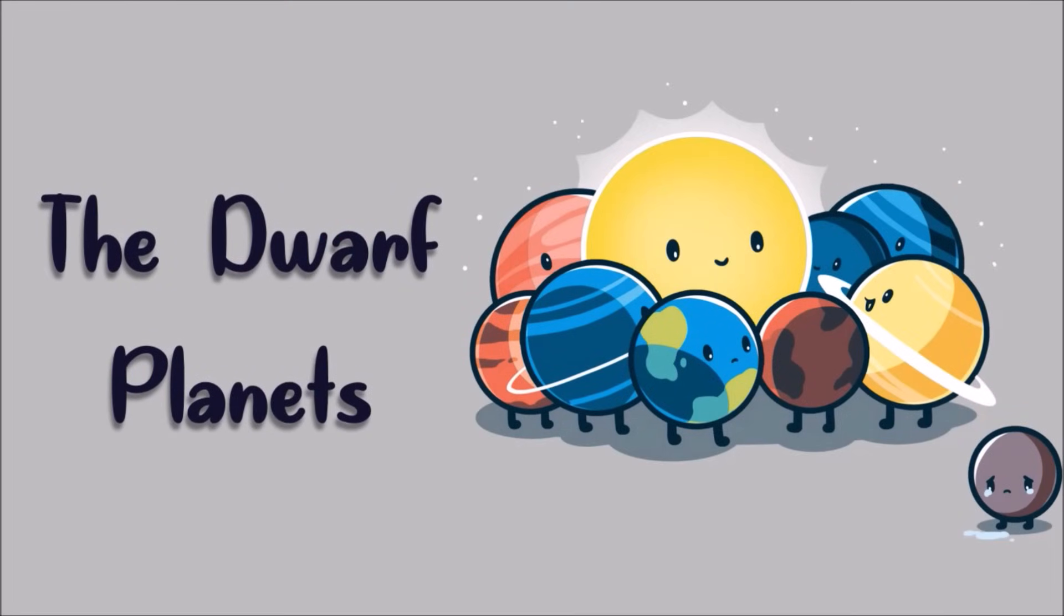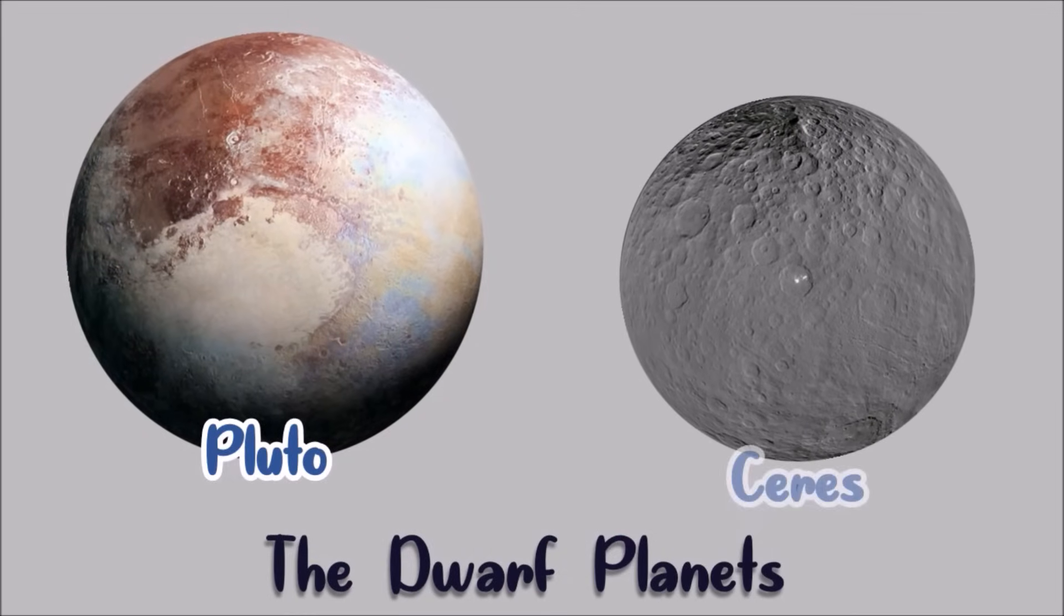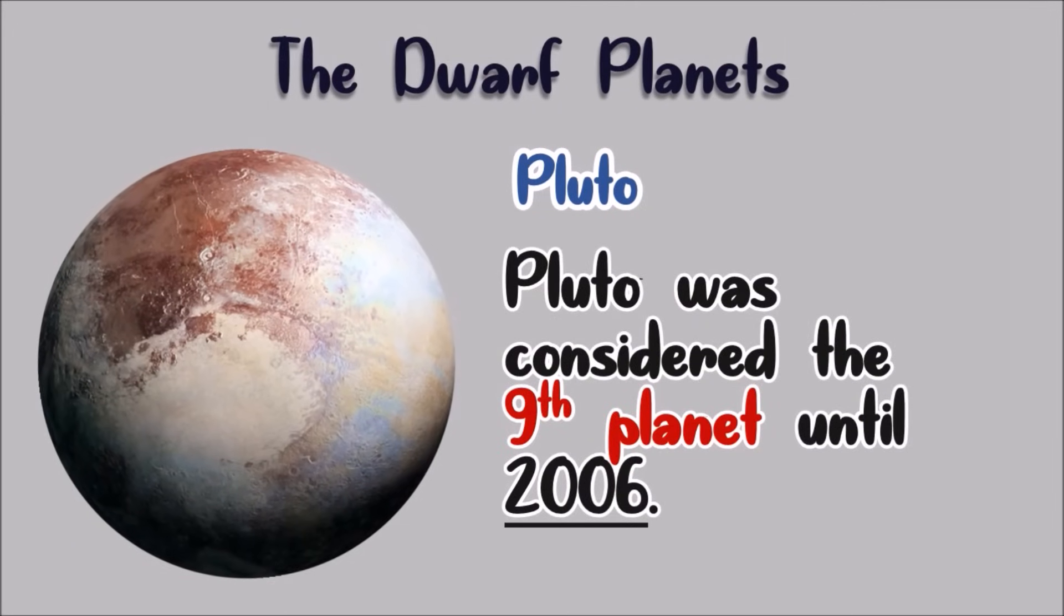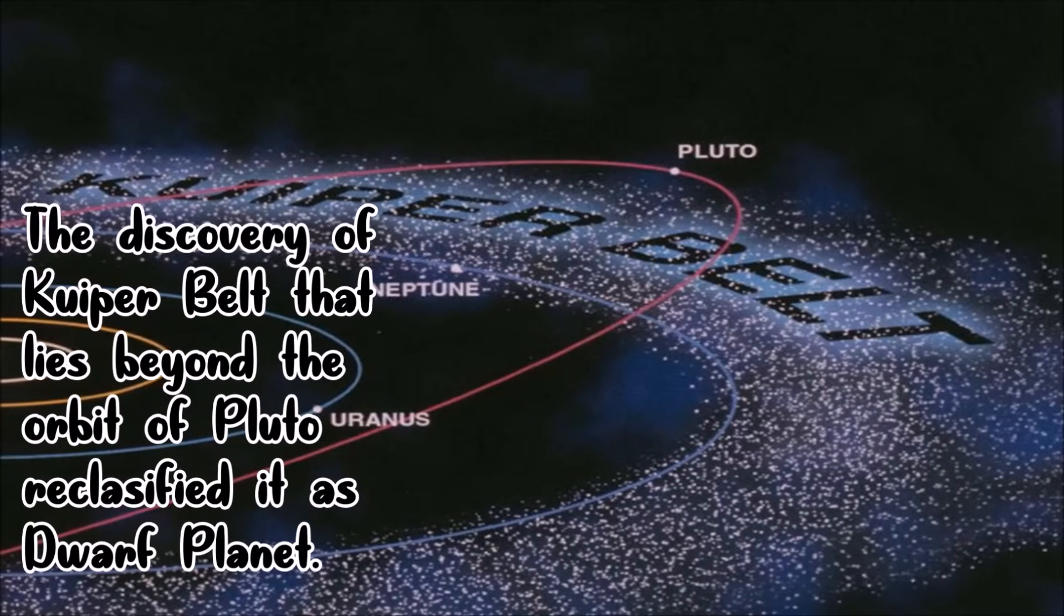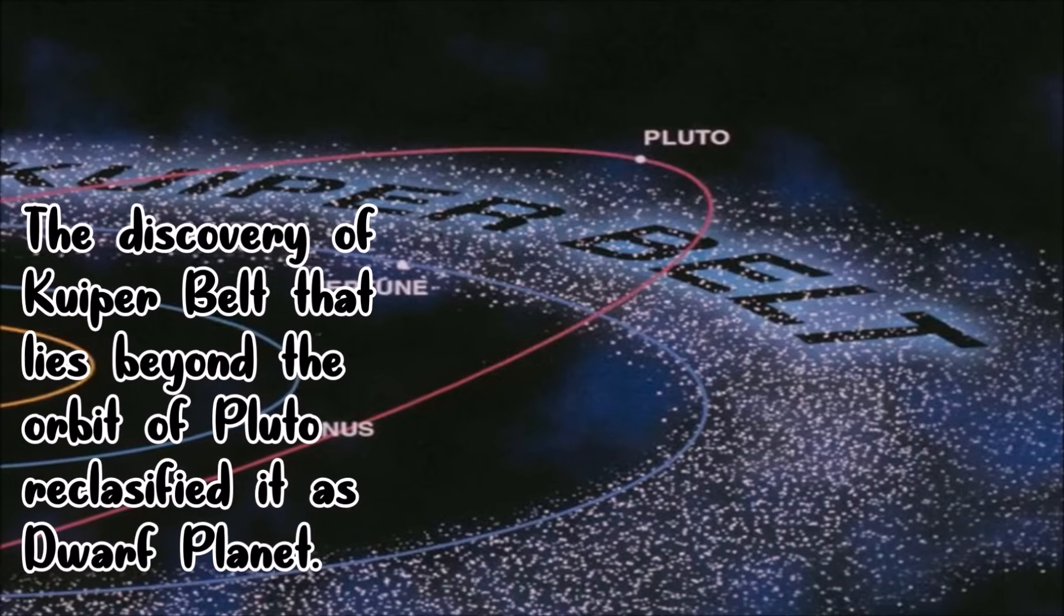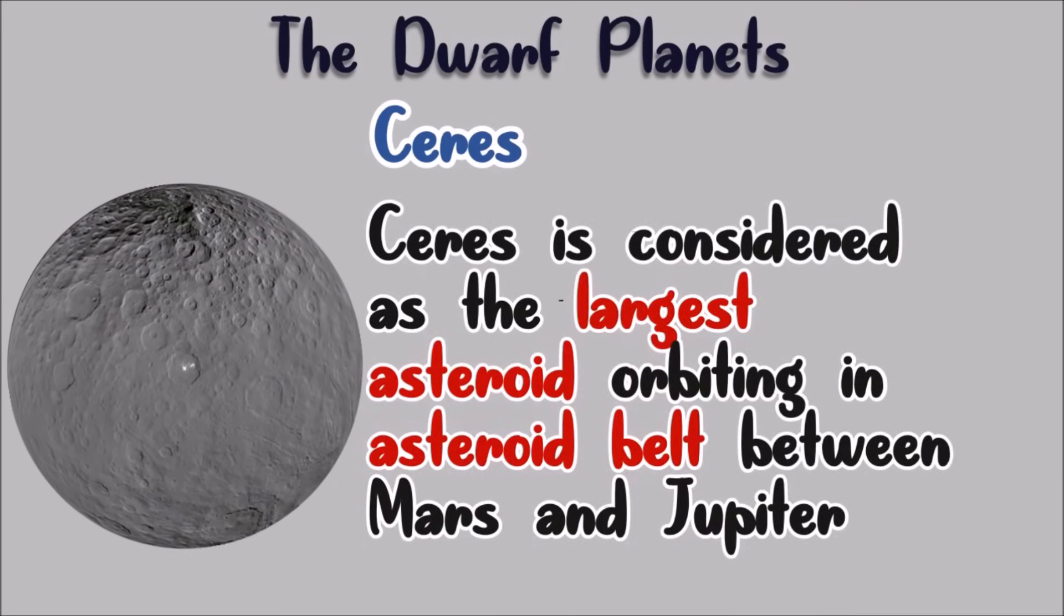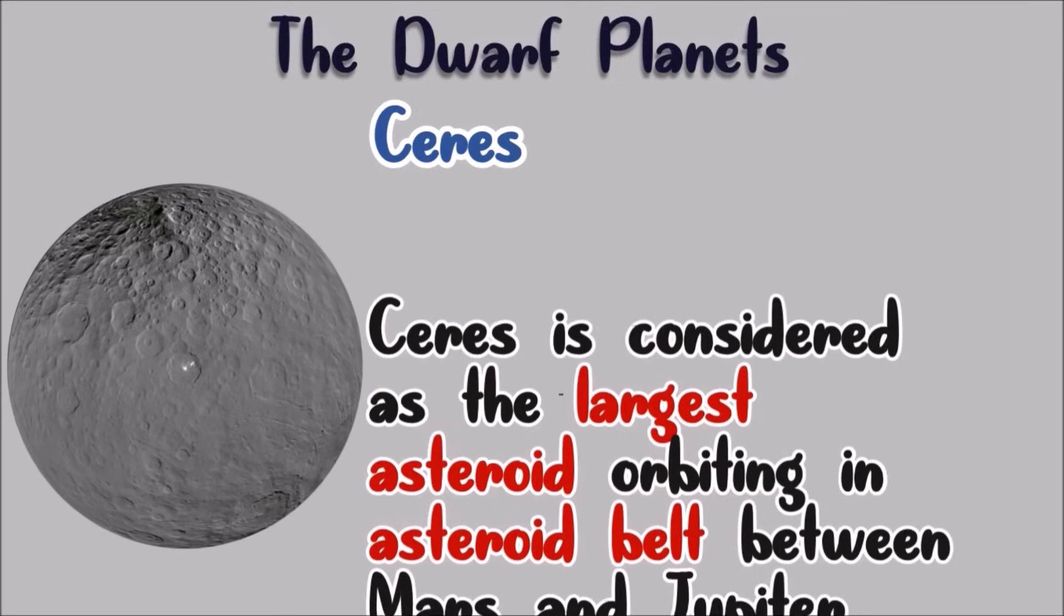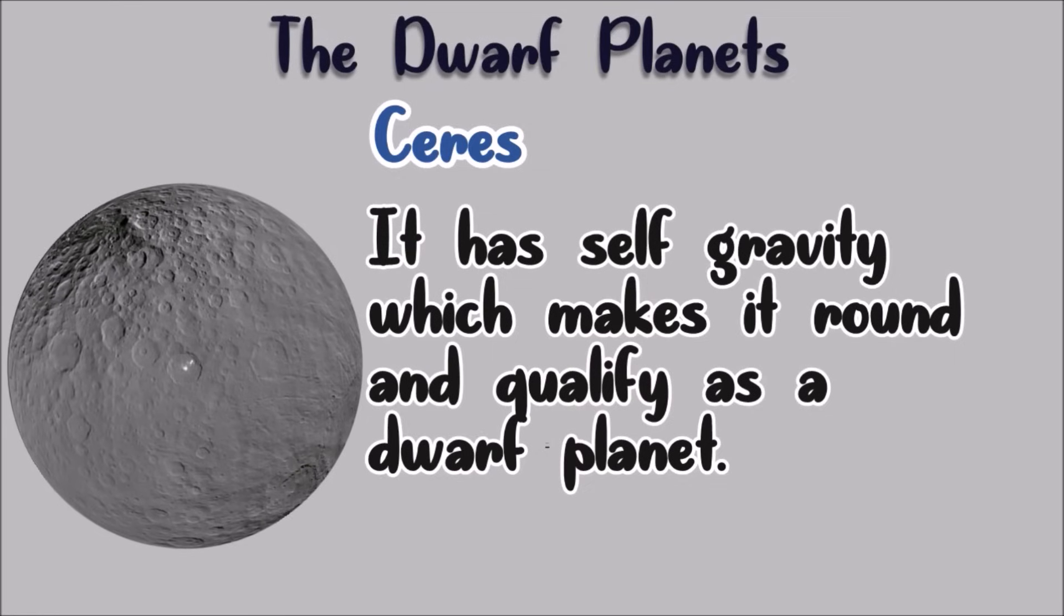Now, let's talk about the dwarf planets. Some of the examples of dwarf planets are Pluto and Ceres. Pluto was considered the ninth planet until 2006. The discovery of the Kuiper Belt that lies beyond the orbit of Pluto reclassified it into a member of dwarf planet. Ceres is considered as the largest asteroid orbiting between Mars and Jupiter. It has self-gravity, which makes it round and qualifies as dwarf planet.